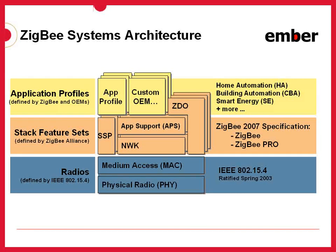Now let's examine the ZigBee system architecture and see who is responsible for which pieces of the system. At the lowest layers, we have the MAC — the medium access control — and PHY, the physical layer, which relate to the radio and how it's accessing the airwaves. This behavior is governed by an IEEE standard, 802.15.4, circa 2003, ensuring favorable coexistence with other 802 standard devices and FCC compliant operation across unlicensed ISM bands within the frequency spectrum.